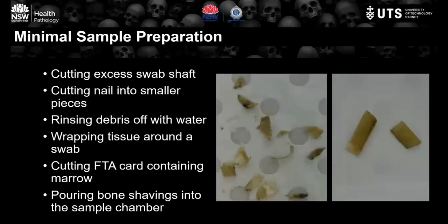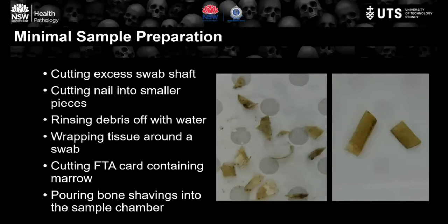Having introduced some of the sample types, I'll now address what I mean by minimal preparation — it addresses both collection and sample preparation. Samples can be collected by simply picking up or cutting. In terms of preparation prior to DNA processing, we avoid repeated washing steps and incubations. Sample preparation can be as simple as cutting off excess swab shaft, cutting nail into smaller pieces, rinsing debris with water, wrapping biopsy tissue around a swab, cutting FTA card, or directly adding bone shavings into the chamber.